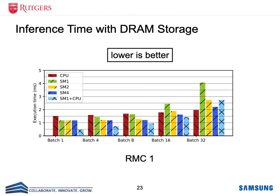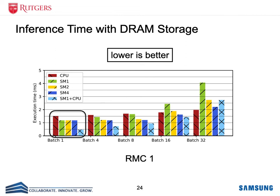We ran different experiments to evaluate different aspects of SmartRec. One experiment computed the end-to-end inference execution time for scenarios where the embedding tables are stored on DRAM. We used various smart SSD configurations such as different numbers of smart SSDs, and scenarios where computation is offloaded to both FPGA and CPU. As you can see, for smaller batch sizes the execution time of SmartRec outperforms the CPU. However, for larger batch sizes, the CPU outperforms SmartRec due to having larger memory bandwidth, which helps with the memory-intensive operations on embedding tables.